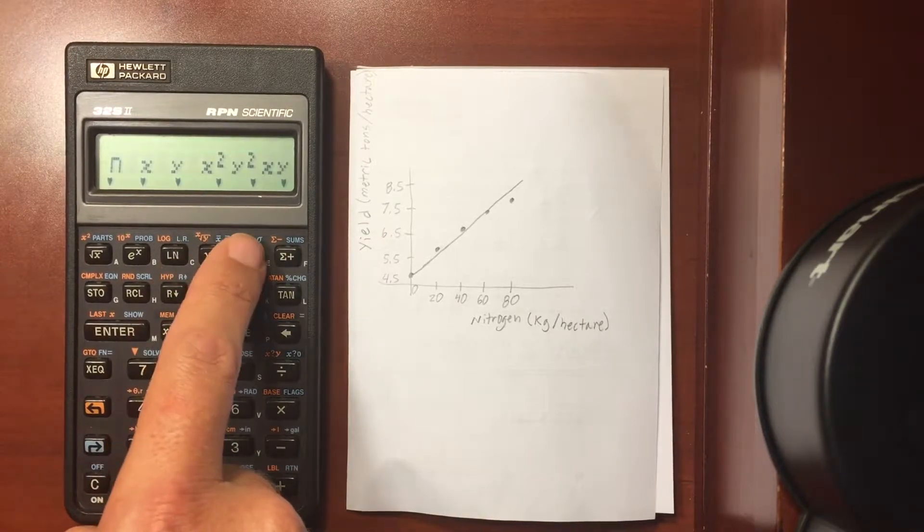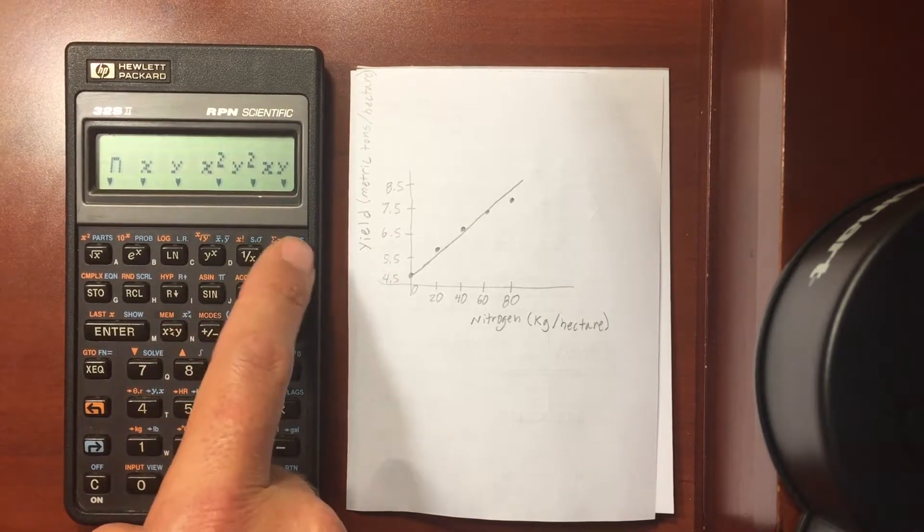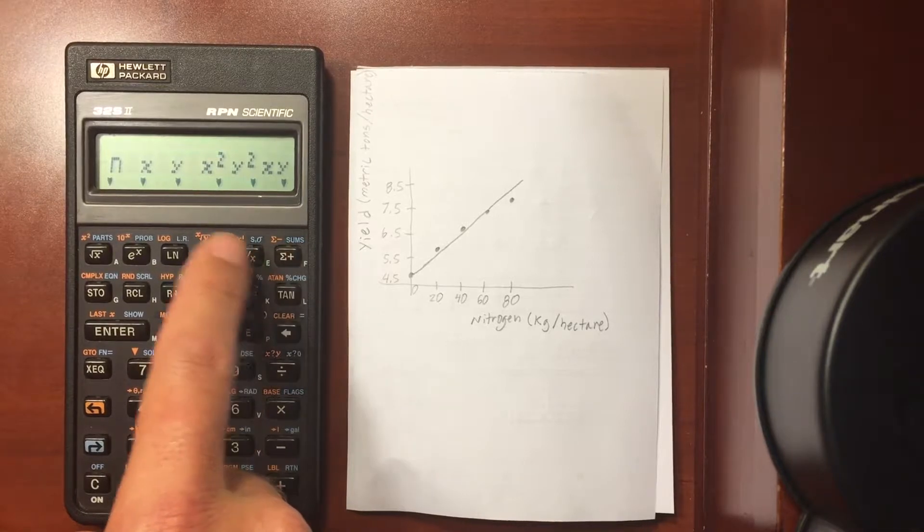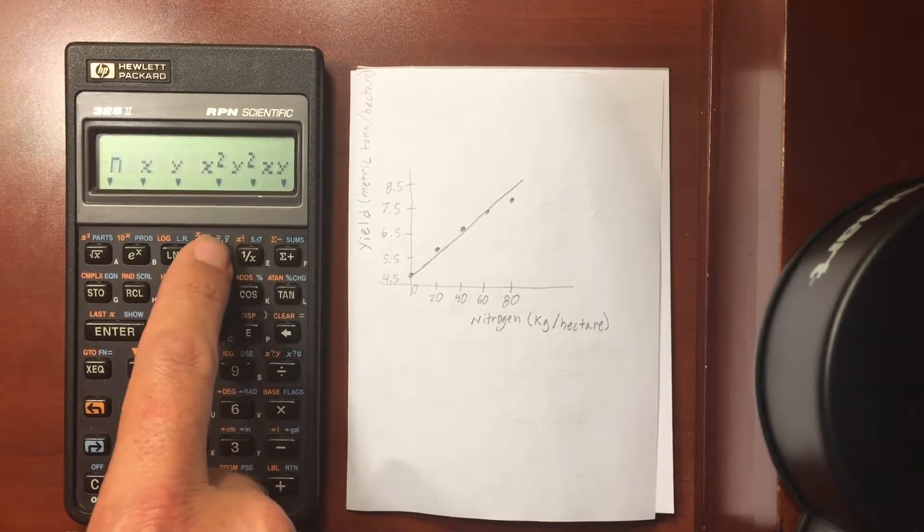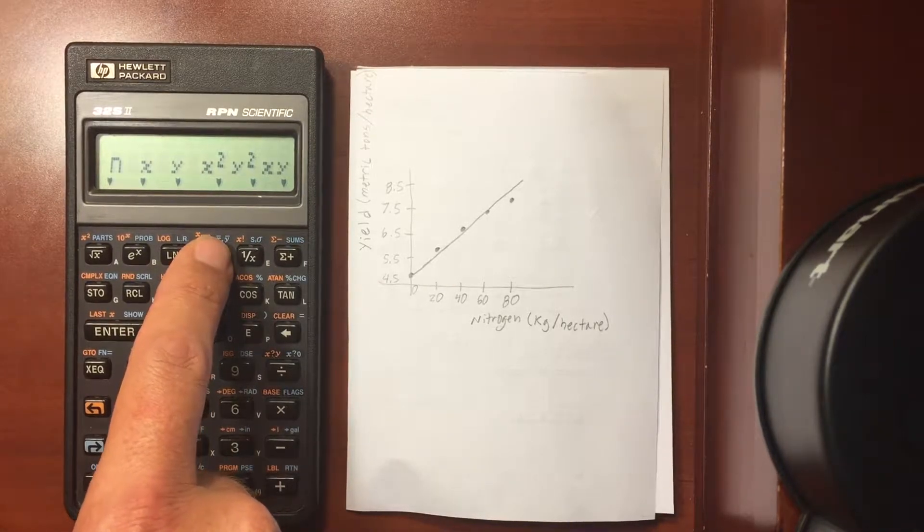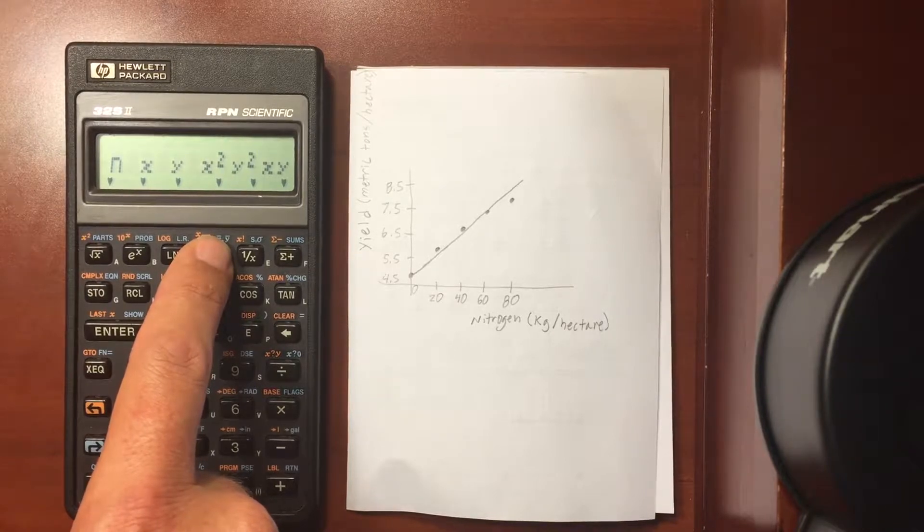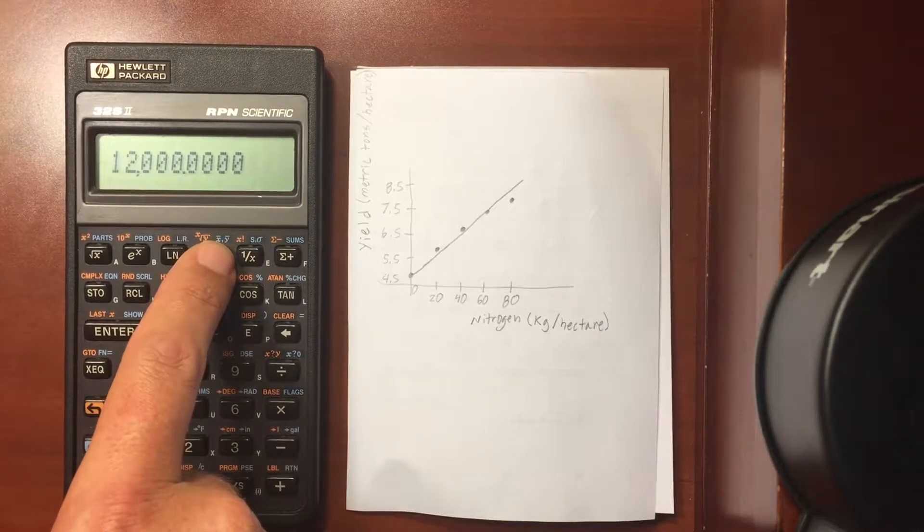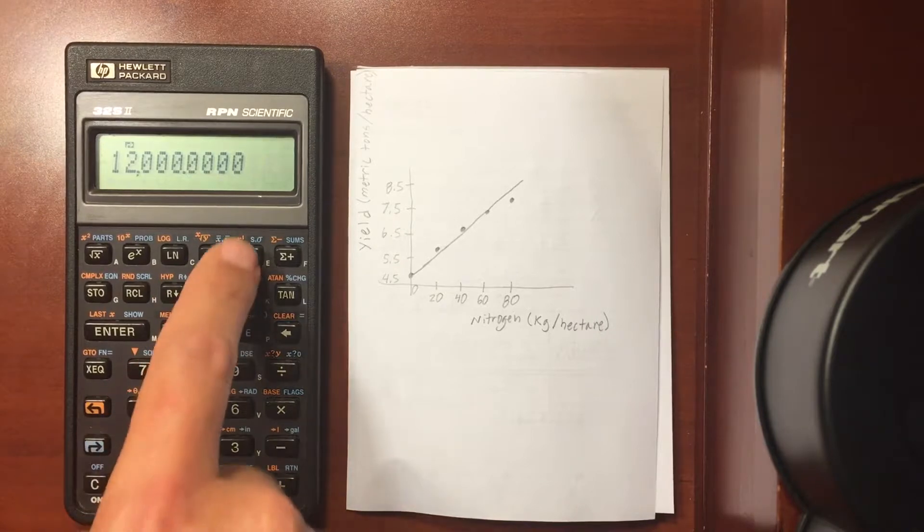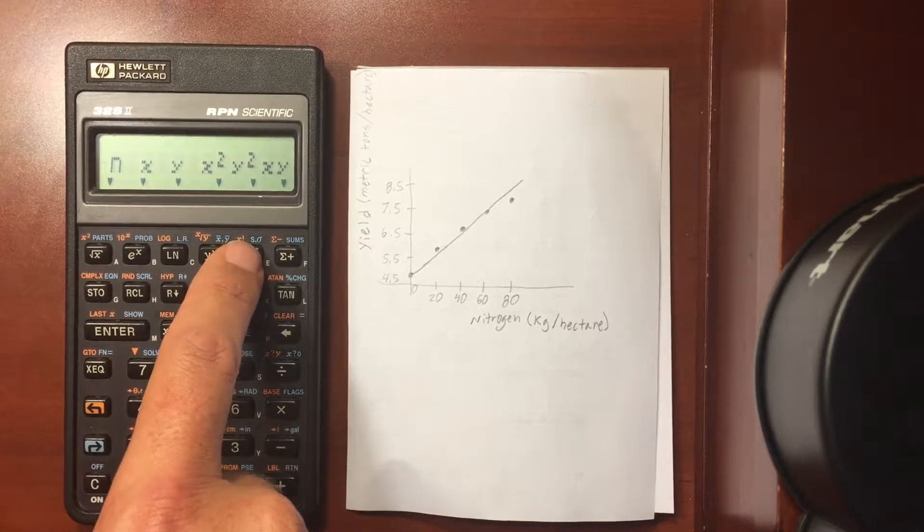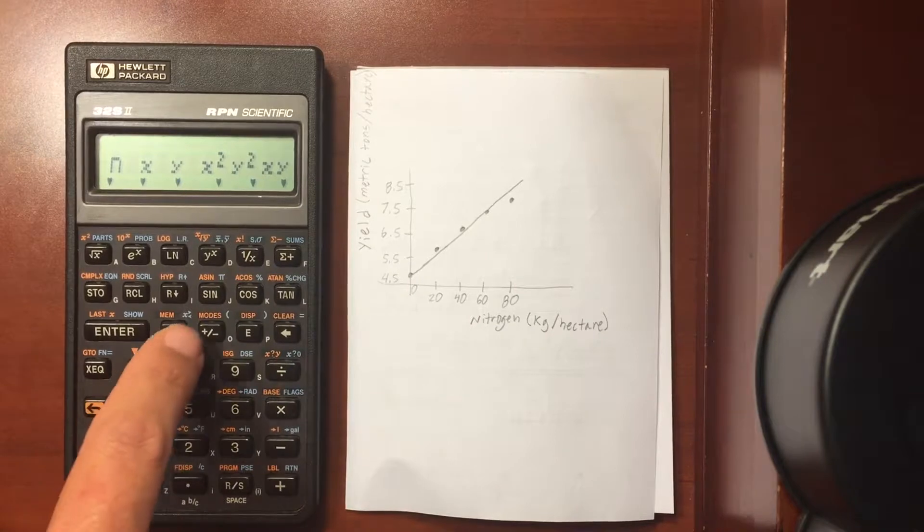And then I can do the same with x squared, y squared, and then x times y. So it filled in these registers as we went along doing what is the sum of all the values squared. What is the sum of all the y values squared? And what is the sum of x times y?